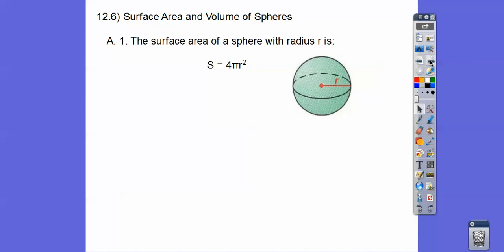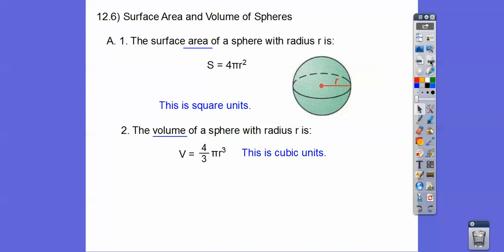So the surface area of the sphere with radius r is 4πr². And area, whenever you see the word area, it's always in square units. The volume is 4/3 πr³, and that's always in cubic units.